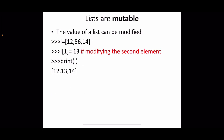Lists are mutable, meaning individual items can be modified after the list is assigned. For example, with a list [12, 56, 40], assigning l[1] = 13 modifies the second element. This works for lists but would create an error for strings. After the assignment, printing l gives [12, 13, 40] — the second element is replaced with the new value 13.